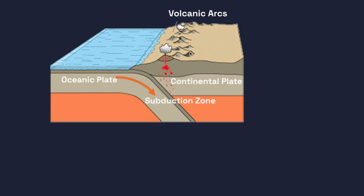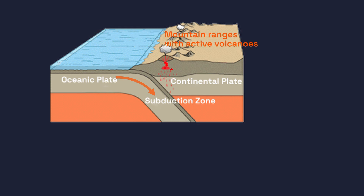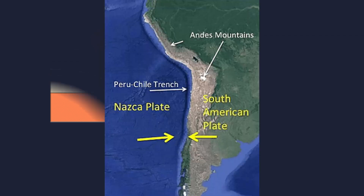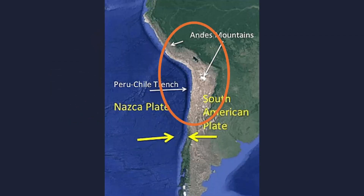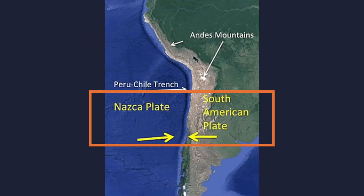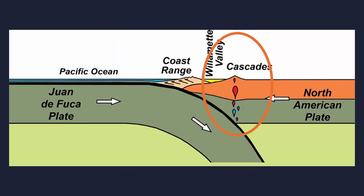This leads to the creation of mountain ranges with active volcanoes. Examples of oceanic-to-continental convergence include the Andes mountain range in South America, where the Nazca plate is subducting beneath the South American plate, and the Cascades in North America, where the Juan de Fuca plate is subducting beneath the North American plate.